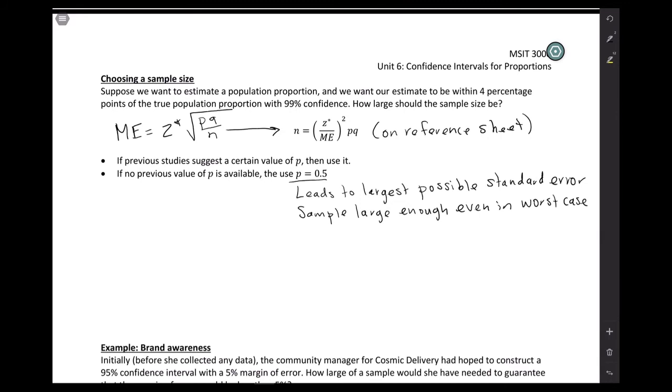Okay, so let's just see how to plug into this formula. So the one we're using, Z star over the margin of error, all of that squared, P times Q, and that's going to tell us what sample size we need.